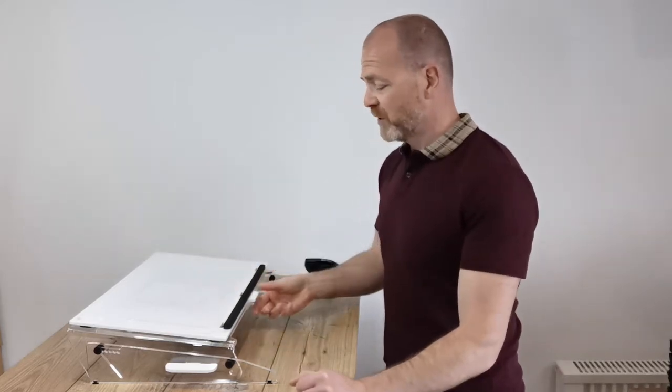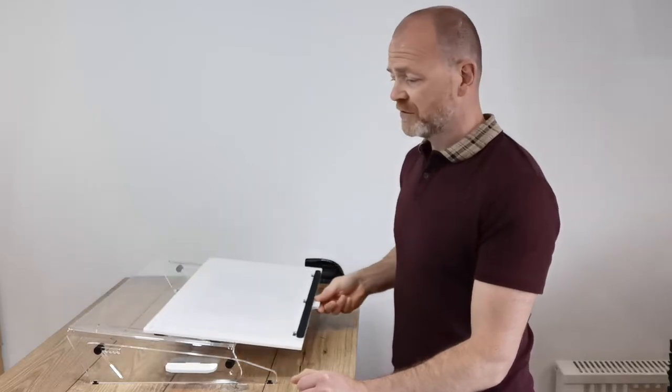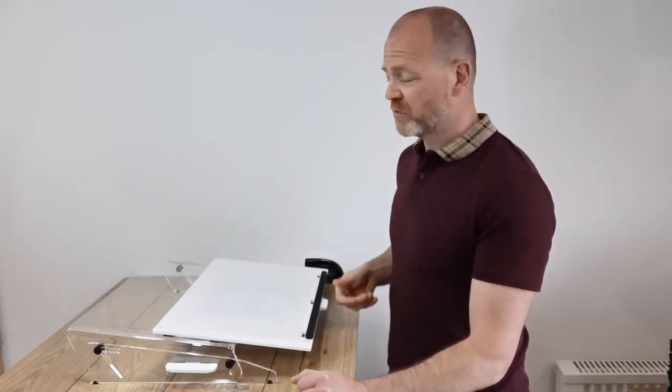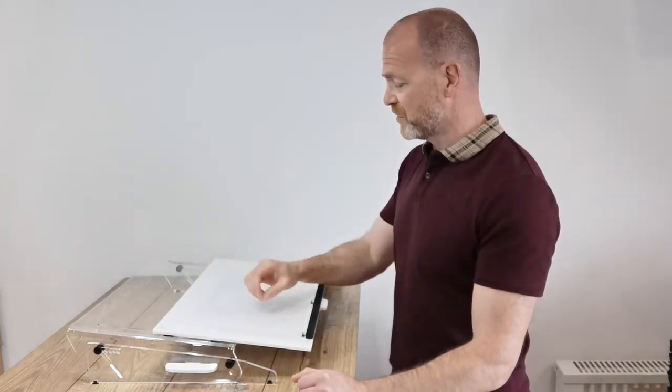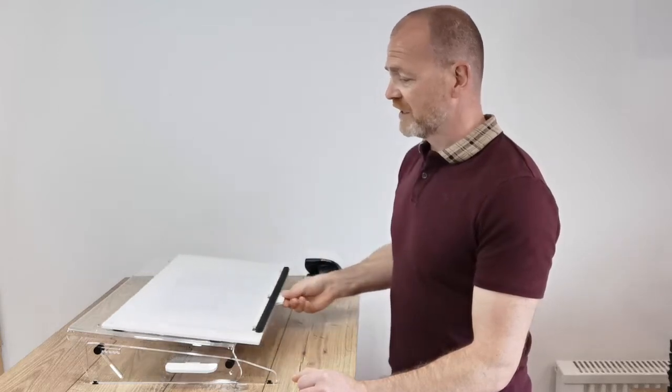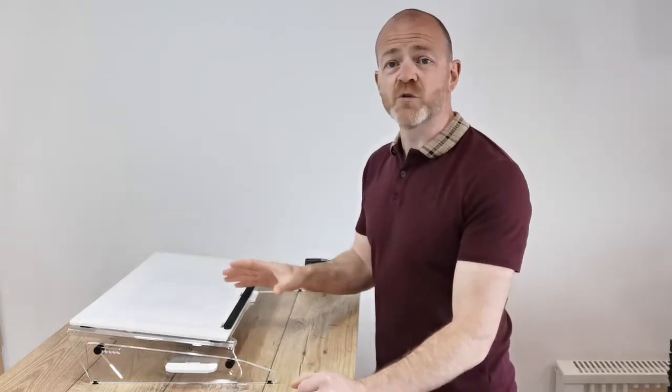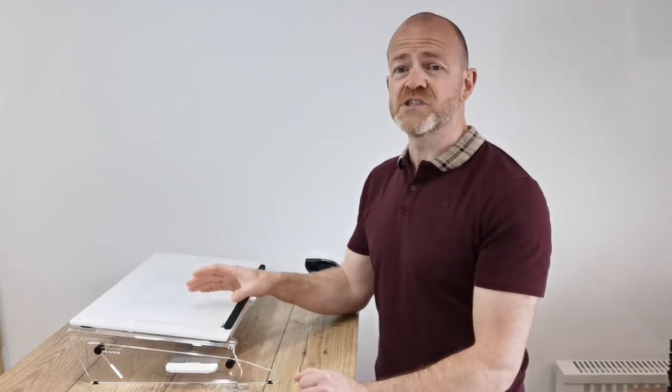The MaxView is a sliding top copyholder writing slope which allows you to bring the copy closer to you to take notes and then slide it back. You'll notice straight away that it's a very low noise unit.